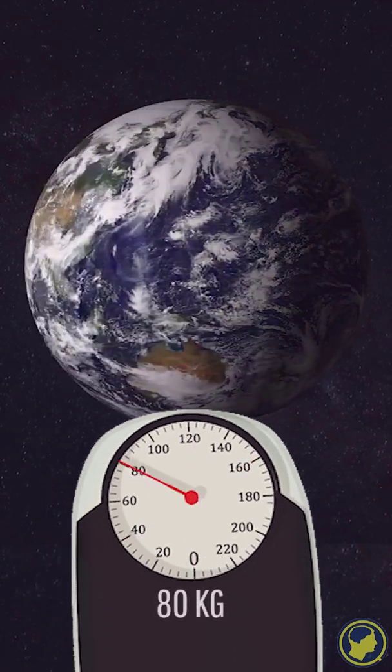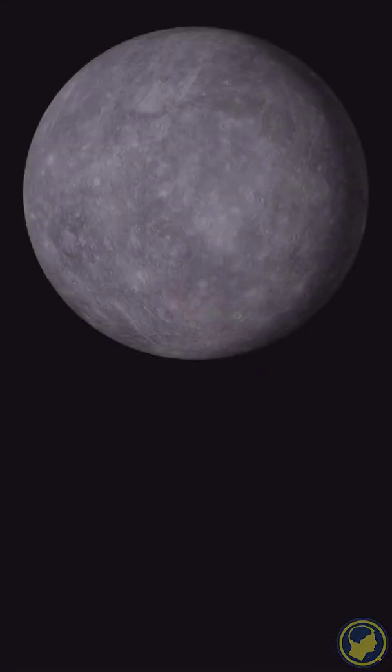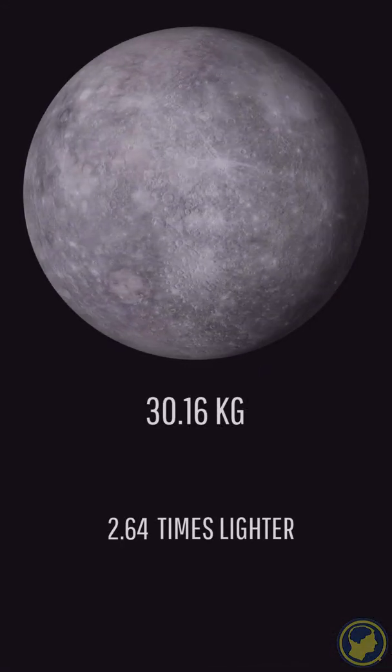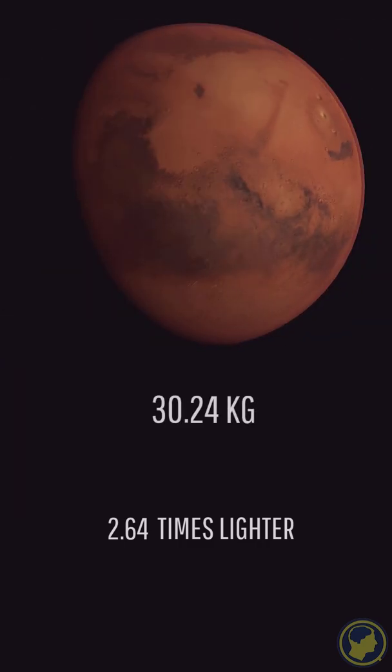For example, if you weigh 176 pounds on Earth, you would weigh around 66.6 pounds on Mercury and 66.5 pounds on Mars.